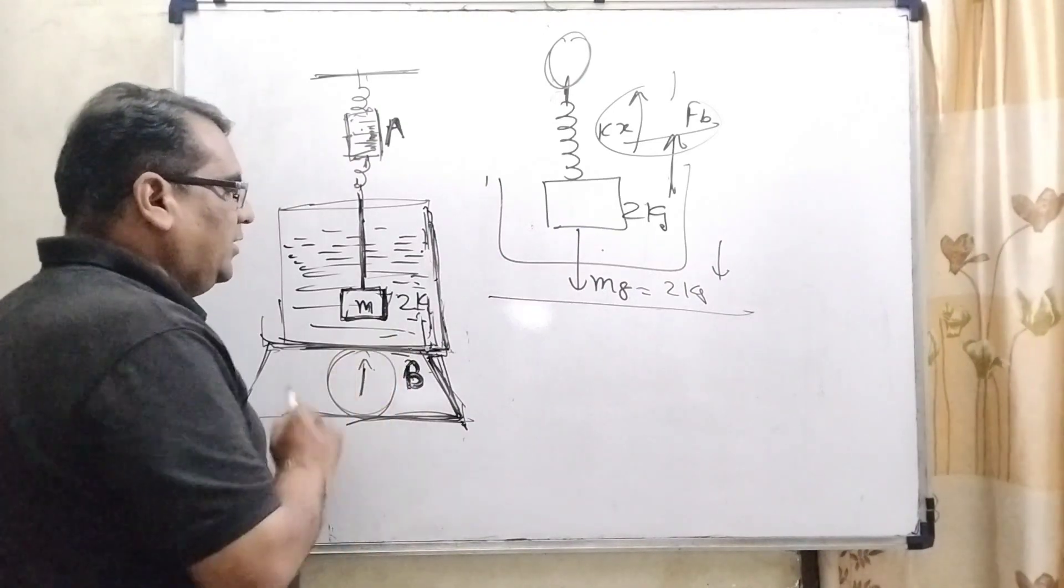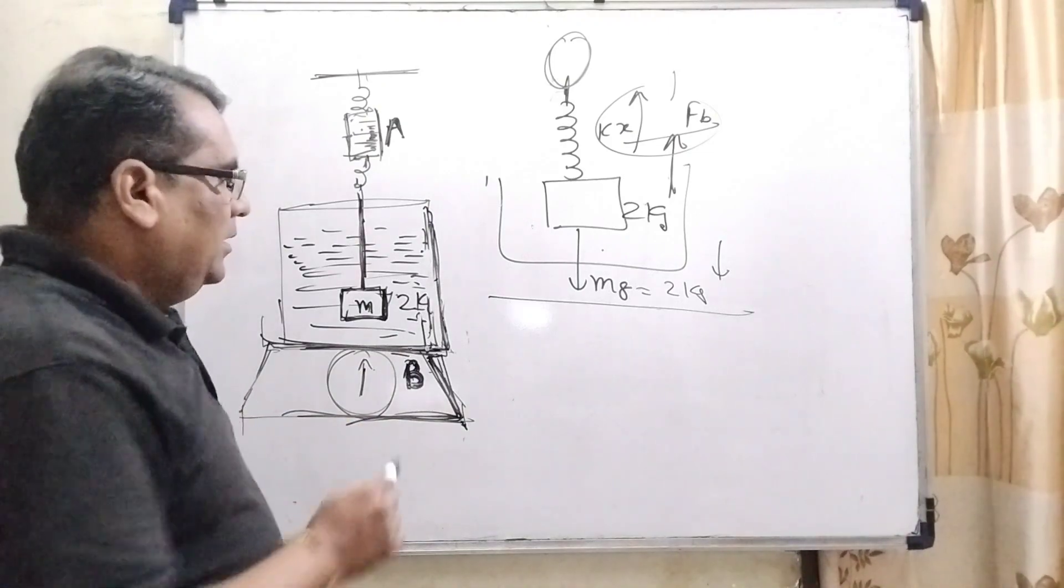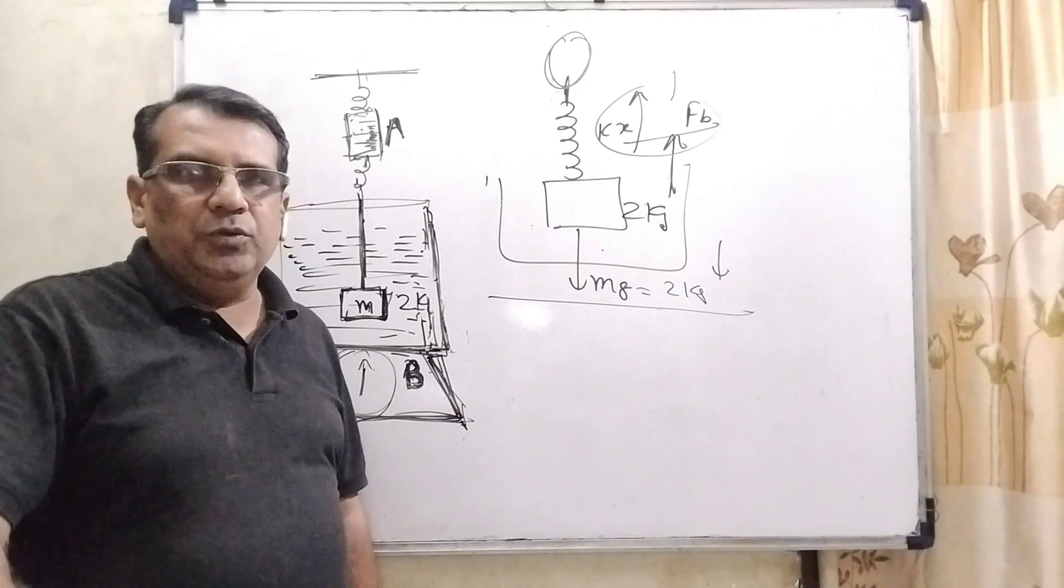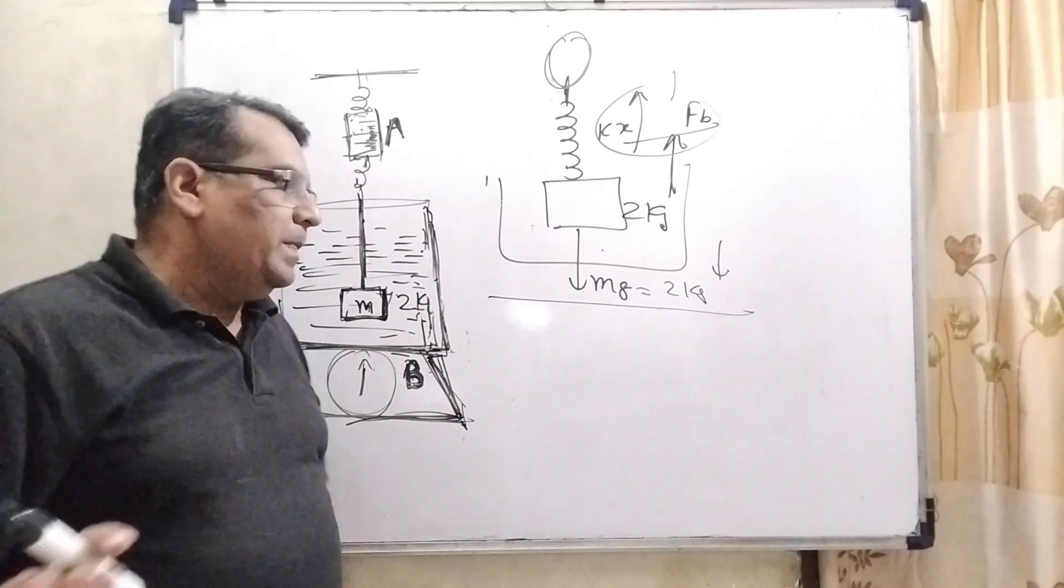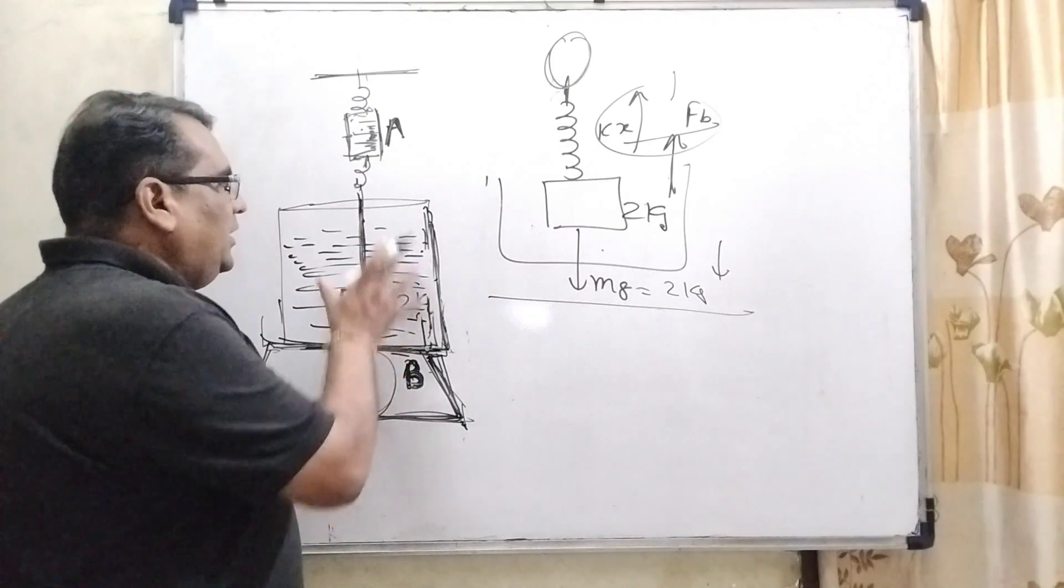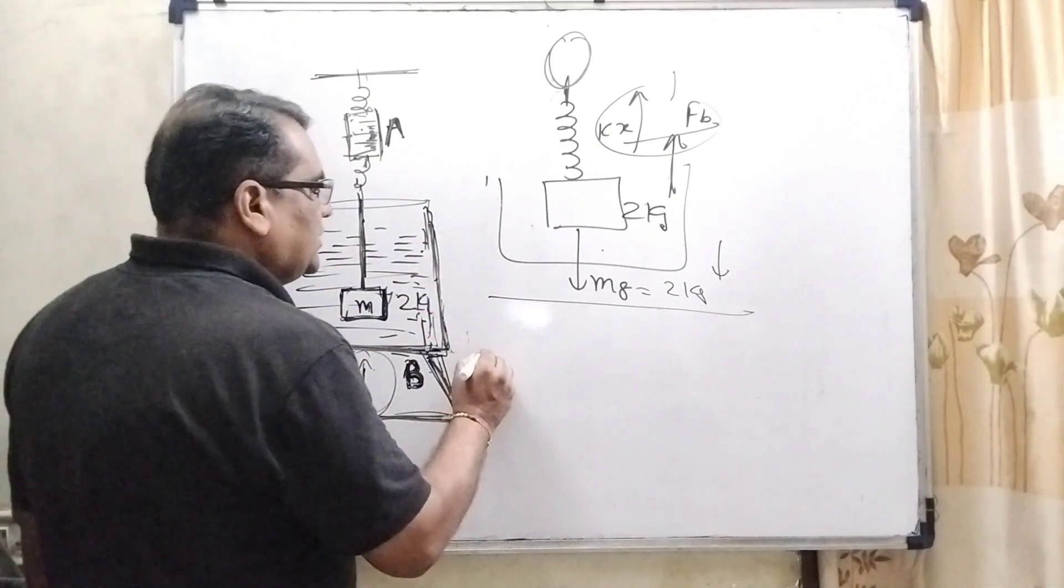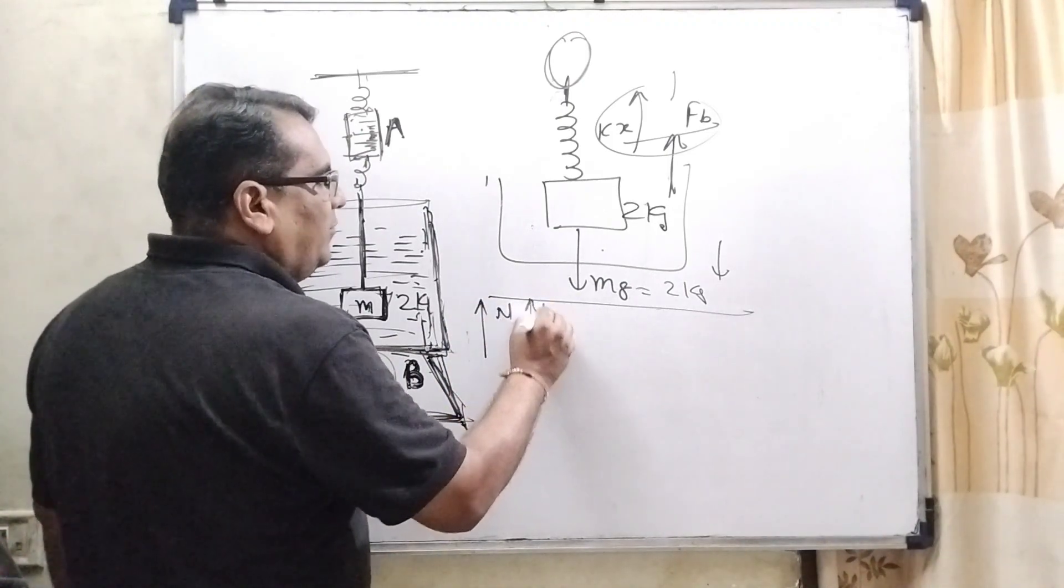And before kept this liquid, here shows the 5 kg. As we know that the pan balance, pan balance always shows the normal force, the reading of the normal force. So, here when whole system is kept on the spring balance, then normal force at upward direction.